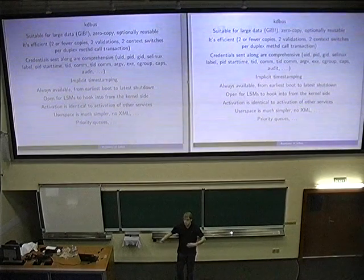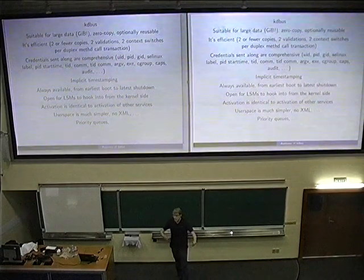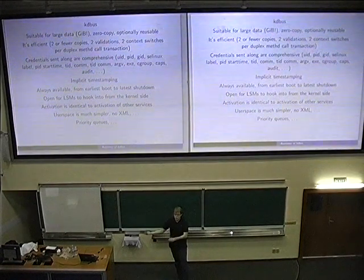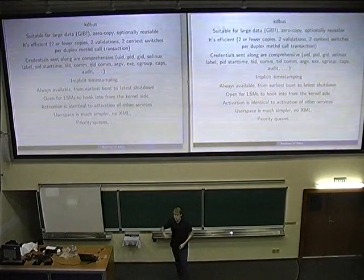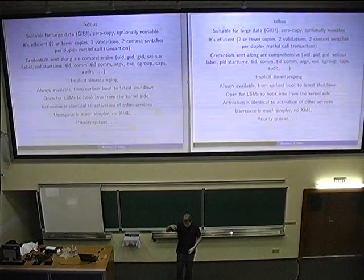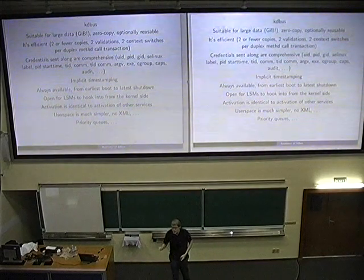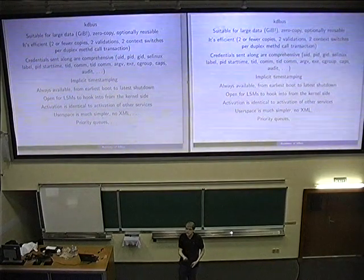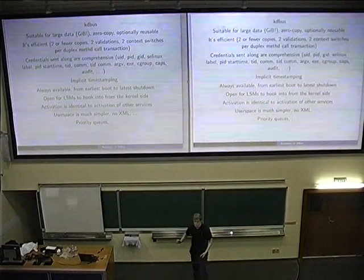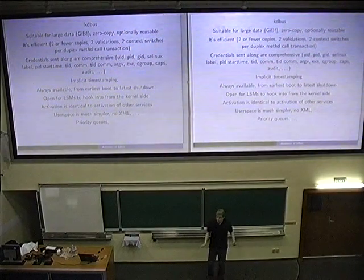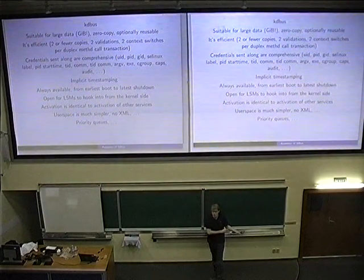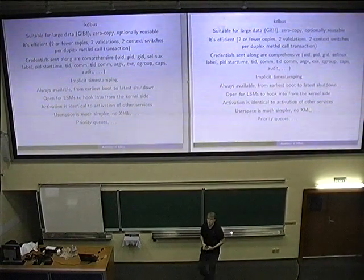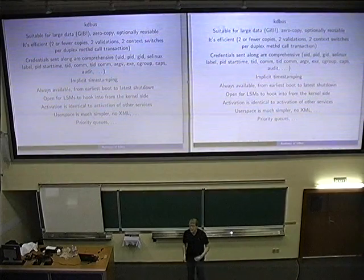Regardless of what transport you use, you will have basically the same API. Of course, if you rely on being able to send gigabytes of data in no time — which will work fine in KDBus but not over the network — then it's your own fault. But for the simple cases you can write something that is completely network transparent and doesn't care if it's over the fast or slow way.